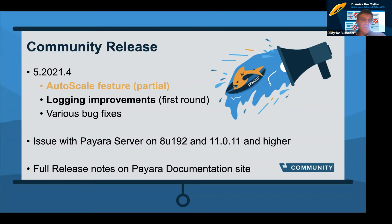About 10 days before the release, we discovered an issue running Payara Server on the latest JDK versions — specifically JDK 8 update 292 and JDK 11 revision 11. These versions have disabled TLS 1.0 and 1.1, and the JMX server part of our server is still using TLS 1.1, so it doesn't start properly and some monitoring functionality is unavailable. We've already fixed this for enterprise users, and the community release fix will come at the end of next month.